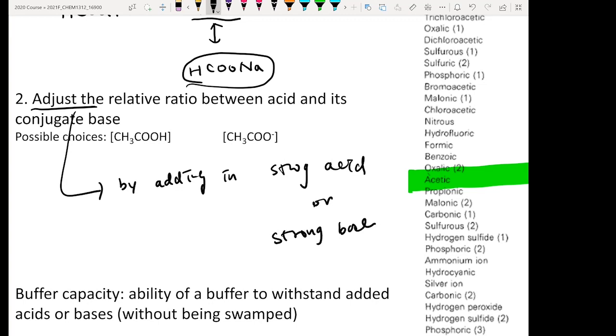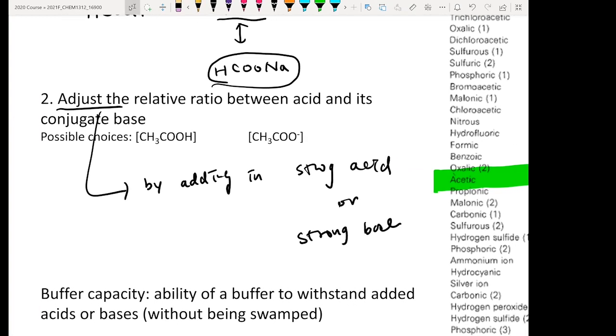One important term that you need to know is buffer capacity. Remember that one criteria we say a buffer must have is that your conjugated acid-base pair needs to be in a large amount, right?